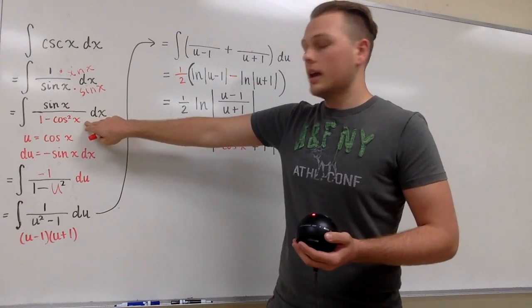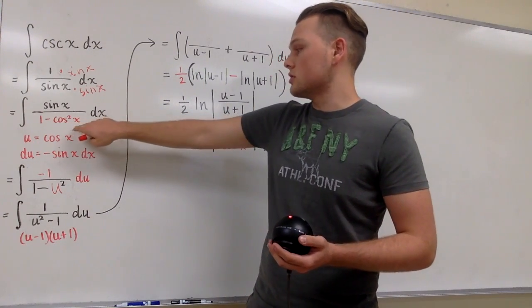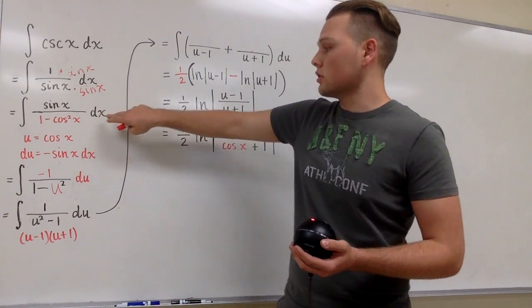I'm just going to go ahead and substitute the trig identity 1 minus cosine squared for sine squared, and of course we have our dx.